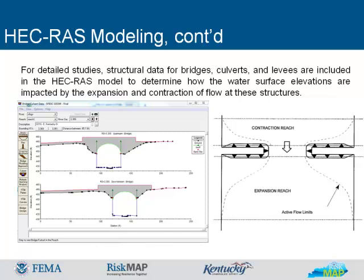Hydraulic analyses are studies that determine the water surface elevation on streams. Engineers use hydraulics data and analysis to produce many risk map products, including water surface elevations, stream profiles, and floodway data tables. Flood insurance studies are primarily concerned with the 1% annual chance and 0.2% annual chance water surface elevations. 1% annual chance elevations are known as base flood elevations and are illustrated on the flood insurance rate maps. For detailed studies, structural data for bridges, culverts, and levees are included in the HECRAS model to determine how water surface elevations are impacted by the expansion and contractions of flow at these structures.